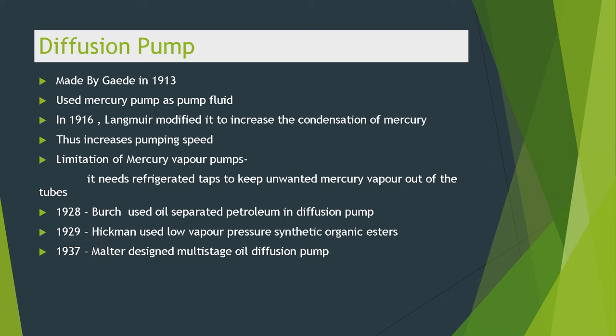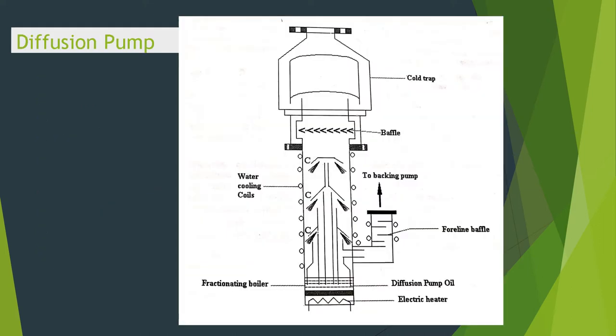In 1928, Birch used oil-separated petroleum in the diffusion pump. In 1929, Hickman used low vapor pressure synthetic organic esters. In 1937, Malter designed the multi-stage oil diffusion pump, which is in use today.